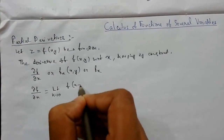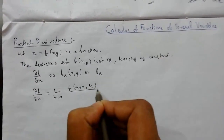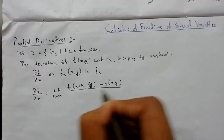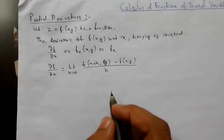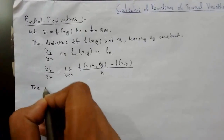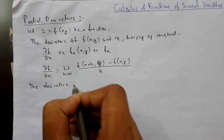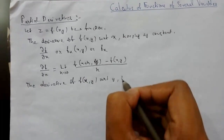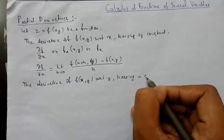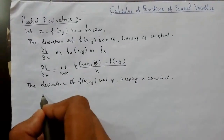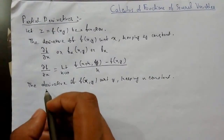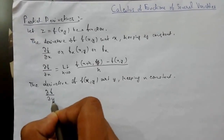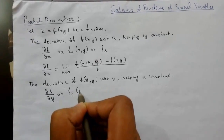This equals the limit as h tends to zero of [f(x+h, y) − f(x, y)] / h. Similarly, the derivative of f(x, y) with respect to y, keeping x constant, is known as the partial derivative of f(x, y) with respect to y.